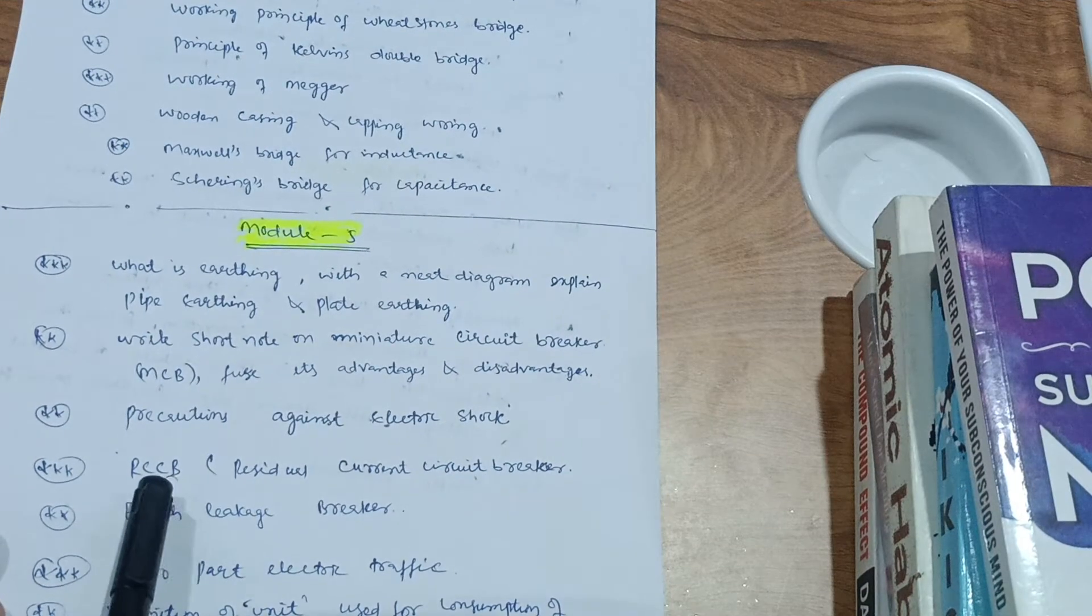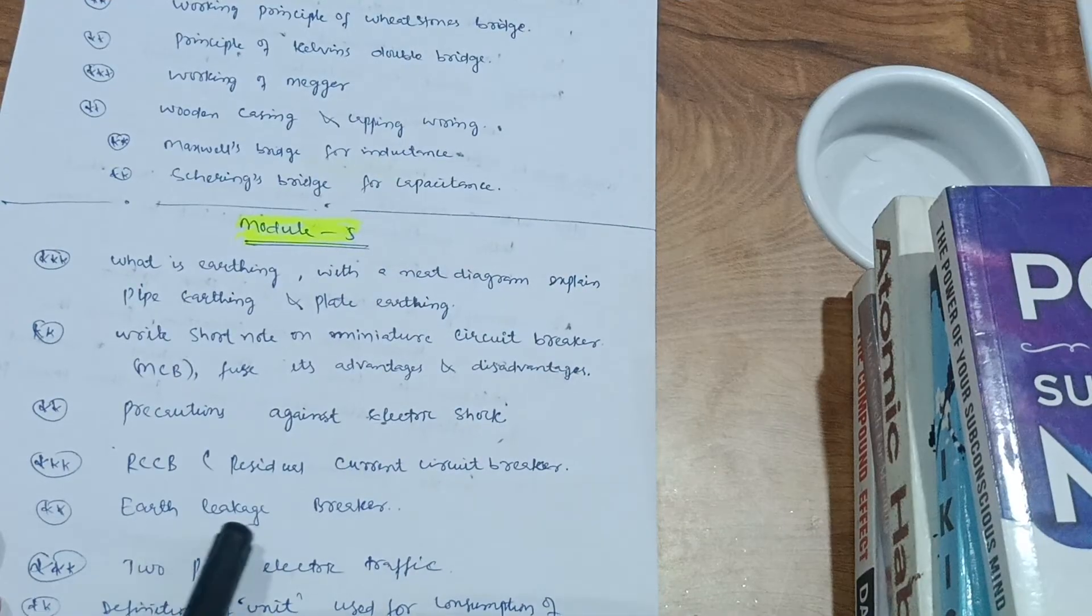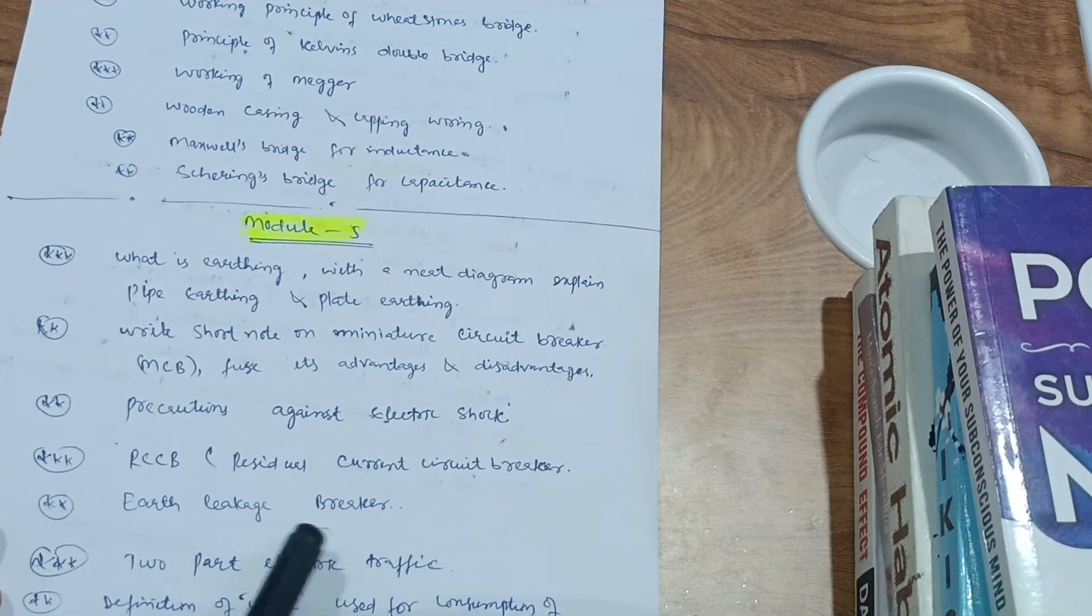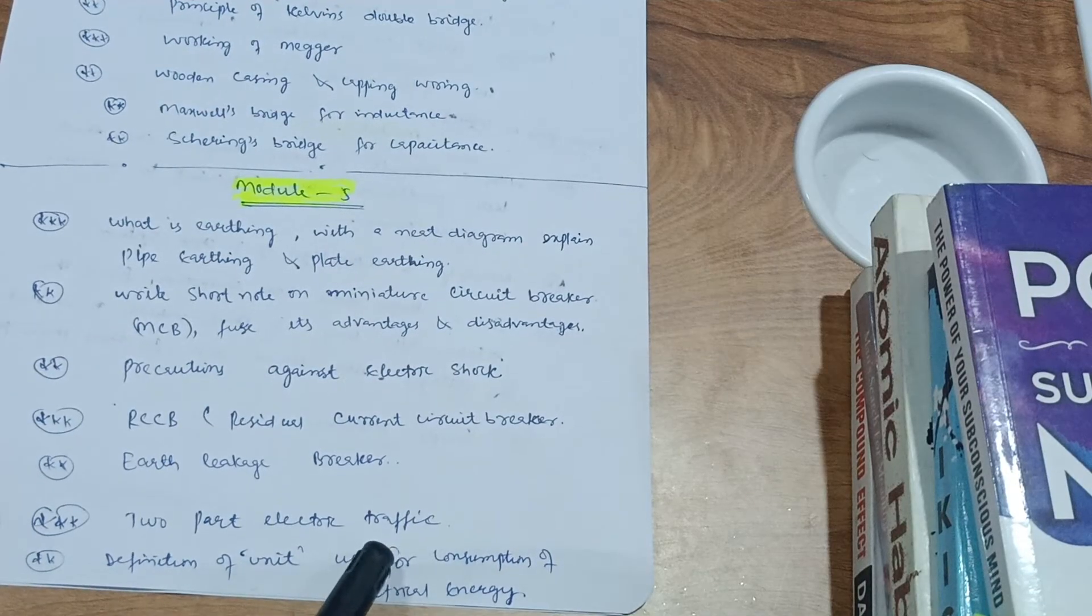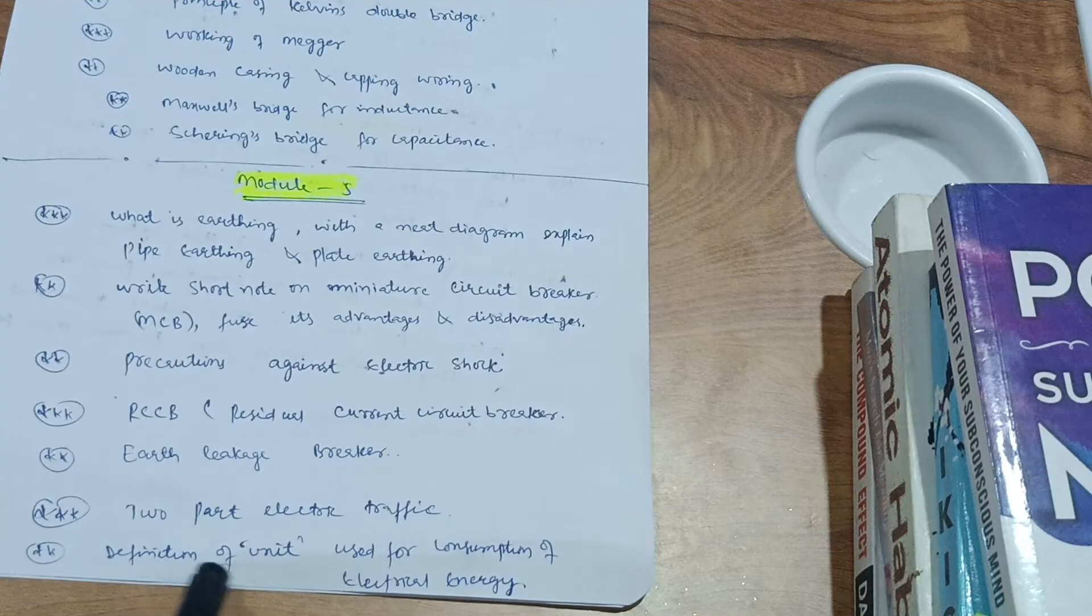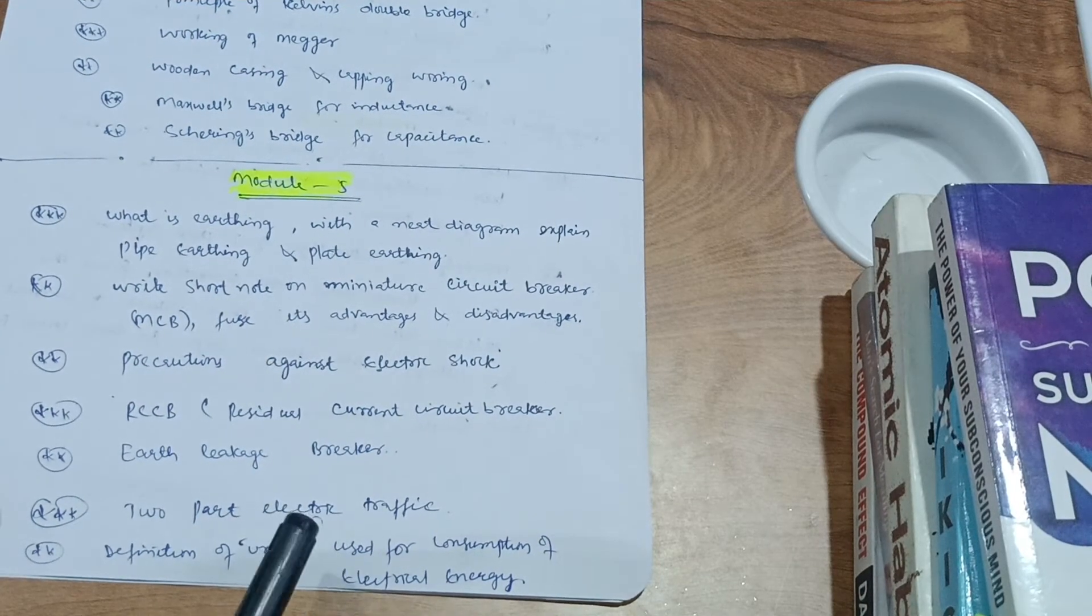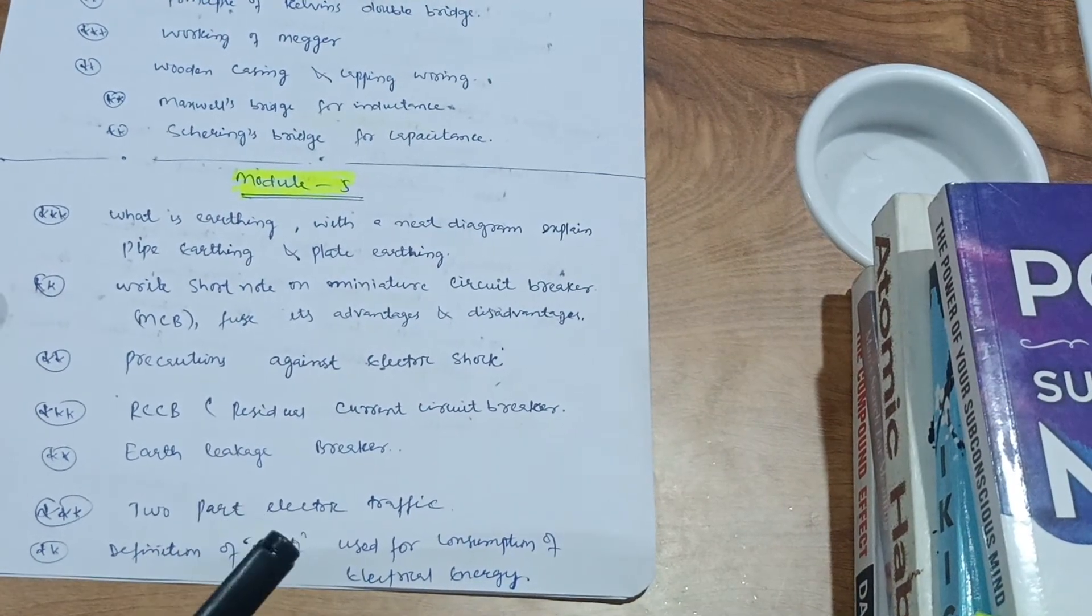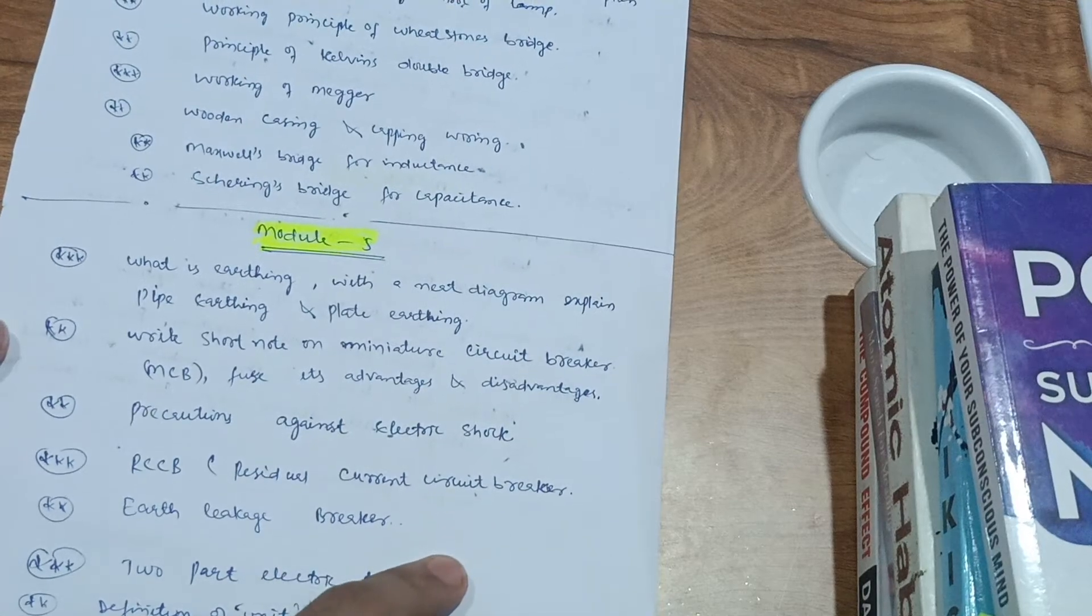Next one is RCCB, that is residual current circuit breaker. Next one is the earth leakage breaker. Then next one is the two-part electric tariff as this is mentioned in the syllabus. Then the definition of unit used for the consumption of electric energy. You have to focus on these theory questions so that it will be easy to conquer this module, that is Module 5.